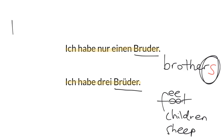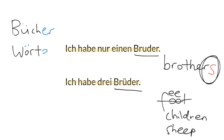You might be used to seeing words like Buch or Wort, which form their plurals in a similar way — with an Umlaut and then E-R, making Bücher and Wörter. But in this case, we're just adding the Umlaut onto the U, and that makes the plural.